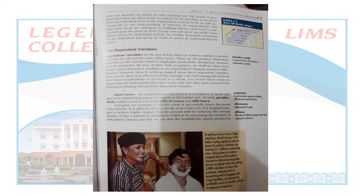In an organization, there are many such factors related to people working inside. Their way of working, their affiliations, productivity, how capable they are — all these are studied as variables. According to research, there can be more than one dependent variable. Currently, four major dependent variables have been identified: productivity, absenteeism, turnover, and job satisfaction.